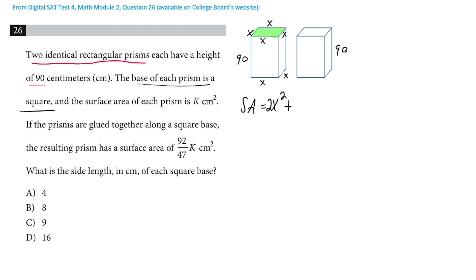Then we've got four sides that are equal to this red face here. So this is the right face of it, but there's also the front, the back, and the left. So there are four faces that have an area of 90 times x. And that's the surface area of one of the prisms, which we're told is equal to k.